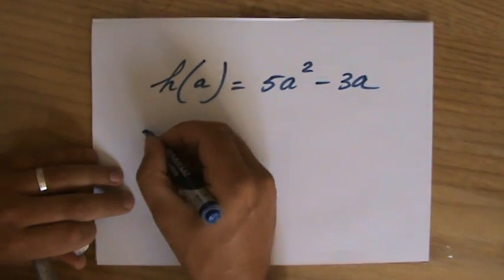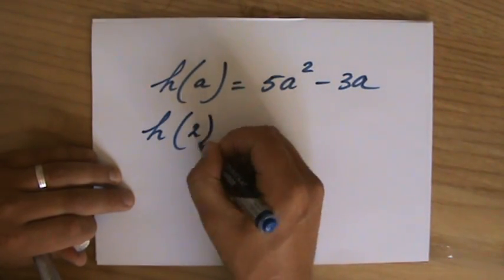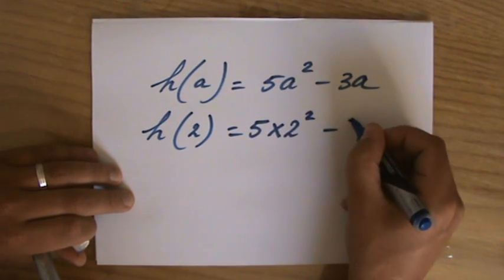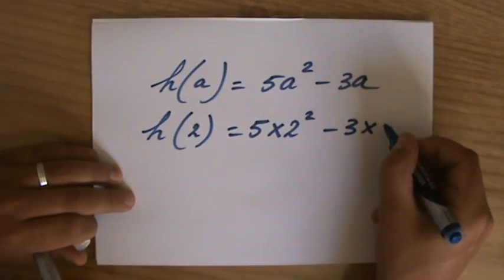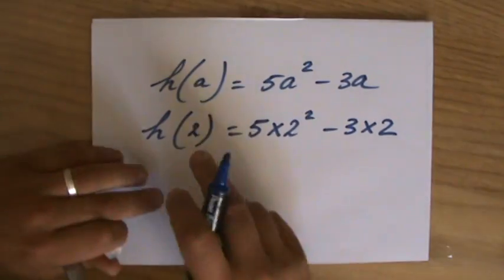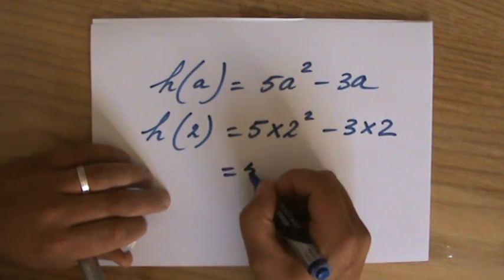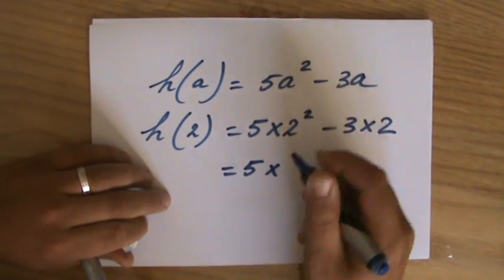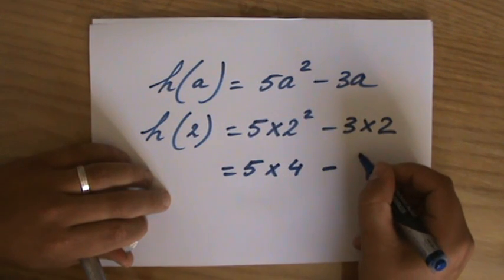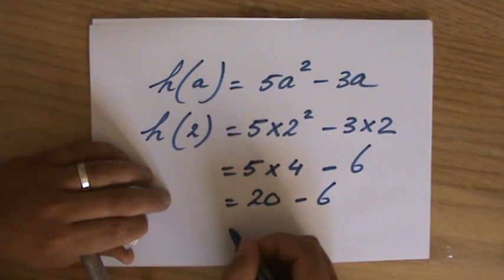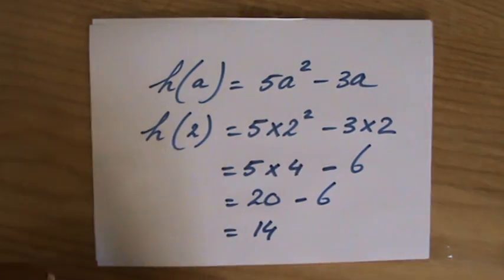So if I had to evaluate that for a is 2, it would be 5 times 2 squared minus 3 times 2. I am substituting 2 into my function. Please, BODMAS or BIDMAS, you do the powers first. So that will be 5 times 4 minus 6, which is 20 minus 6. So my answer is 14.